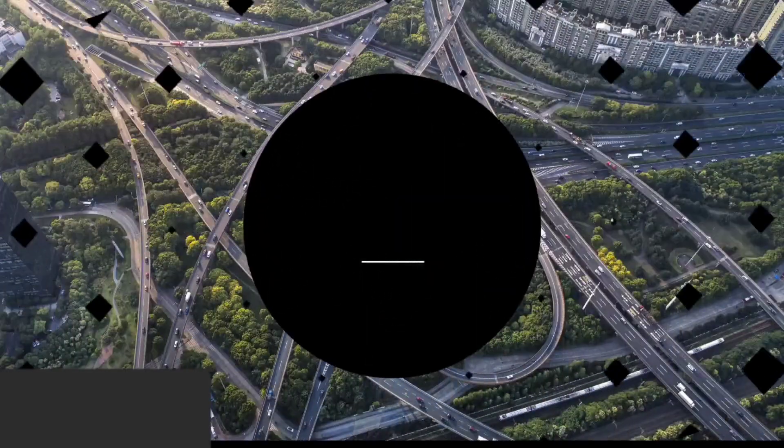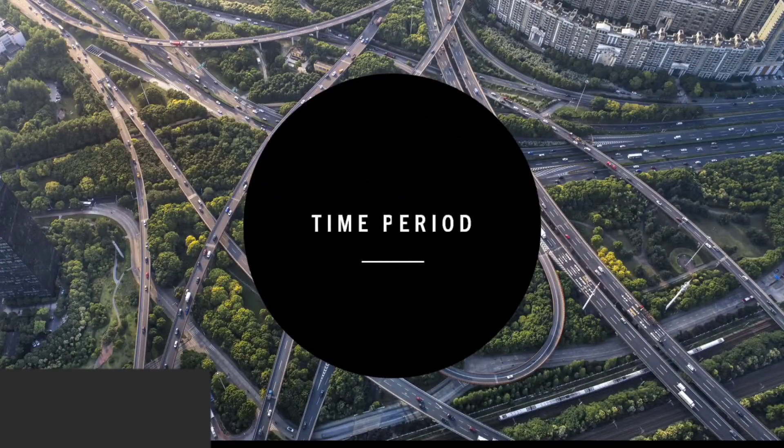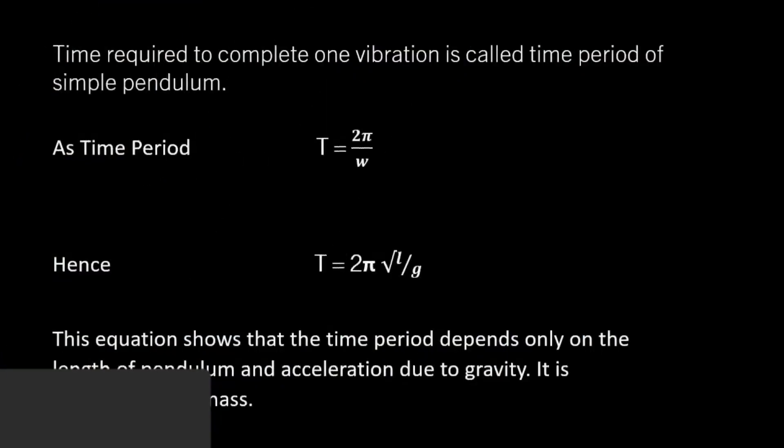Time required to complete one vibration is called time period. Time period is given by T equals 2 pi by omega. Hence, time period equals 2 pi under root L by g.